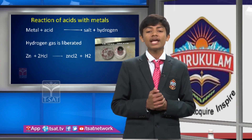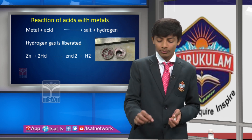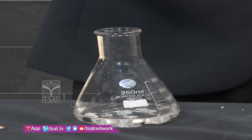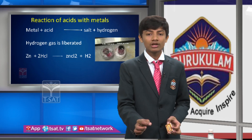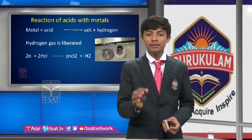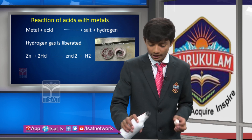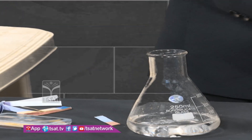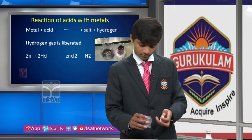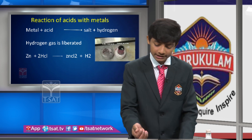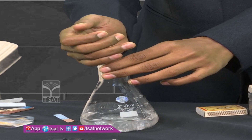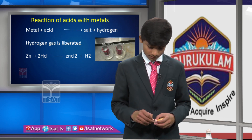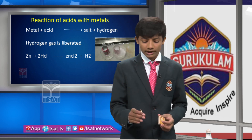To indicate that hydrogen gas is being liberated, we bring a burning glowing splint near the top of the conical flask. When the gas is liberated, the glowing splint gives a pop sound and the fire goes off automatically. I am adding zinc metal to hydrochloric acid and observing that it liberates hydrogen gas.